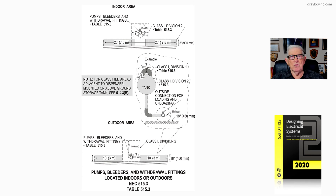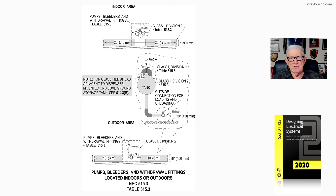Now let's go outdoors. For pumps, bleeders, and withdrawal fittings outdoors, according to table 515.3 for outdoor areas, you have a Class 1 Division 2 area that is 3 foot vertically and 3 foot horizontally. Then from the center out, notice you're 10 foot from the edge — from that 3-foot zone, 10 foot out from that.